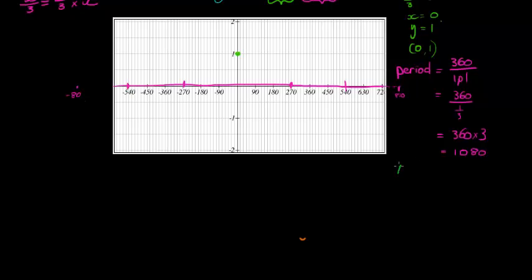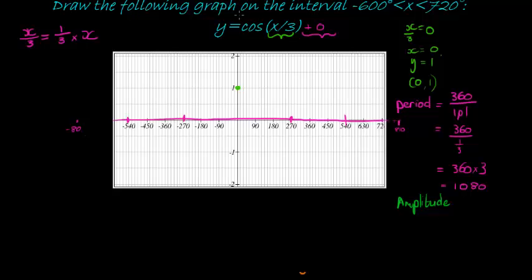But before we get there, we just need to mark off the amplitude. Now the amplitude is how high I go above and below the center line. We look at what's in front of the cosine to determine that. There's a one in front, so we're going to go one unit above the center line, which is already indicated. That's why I like cosine. It's already indicated with my center. So that's where I'm going to start.